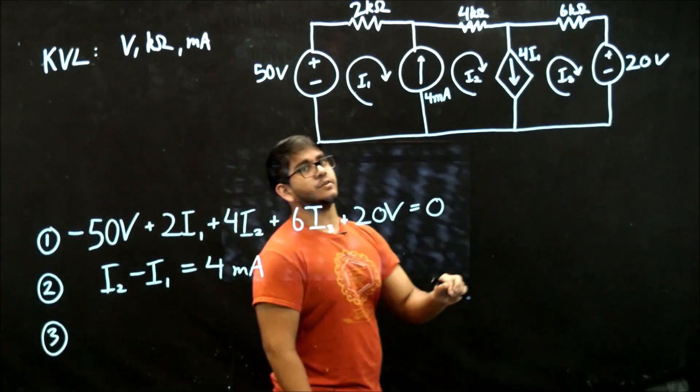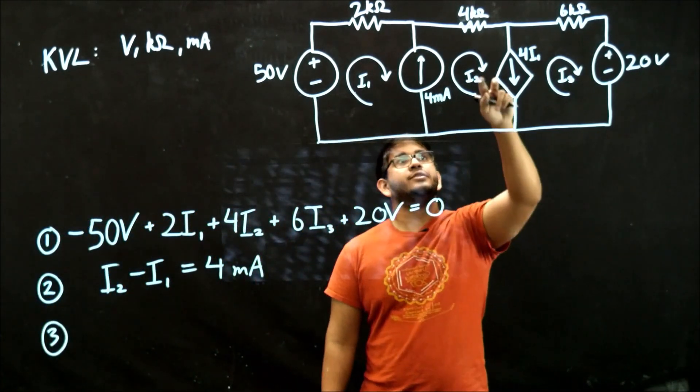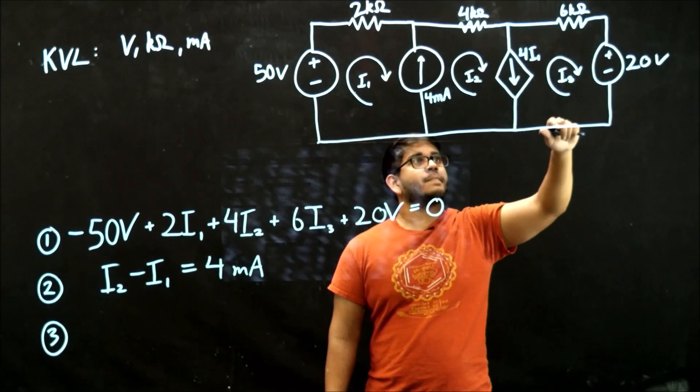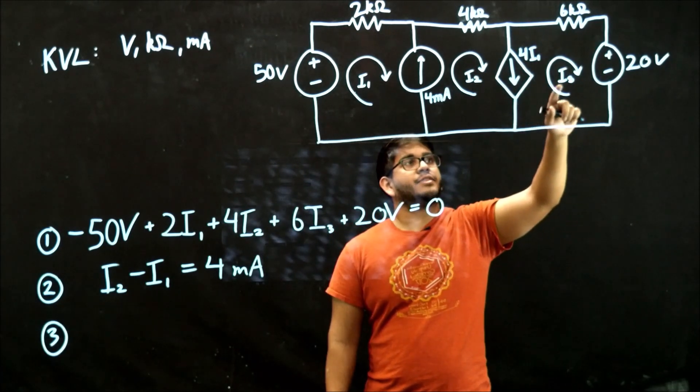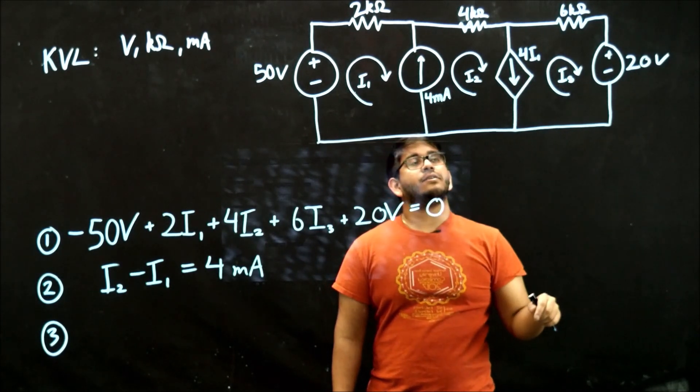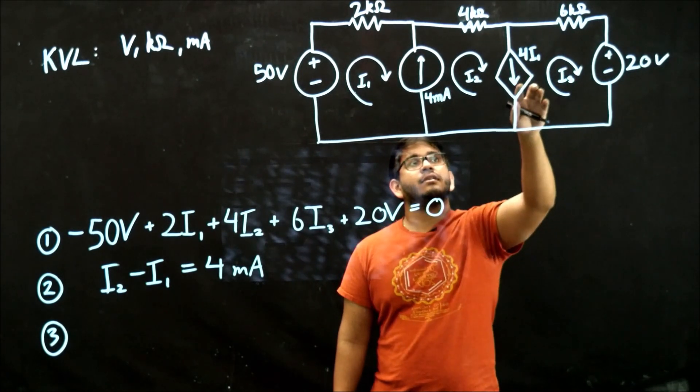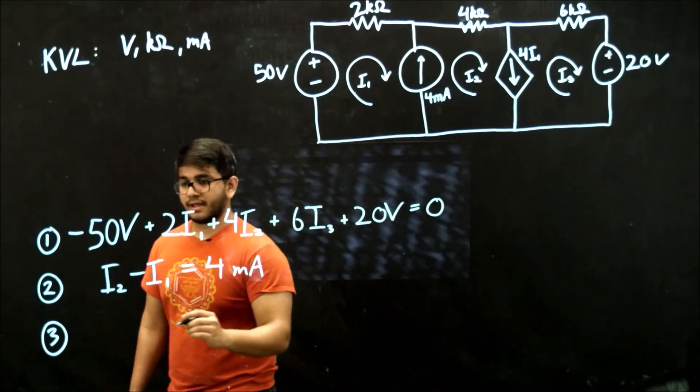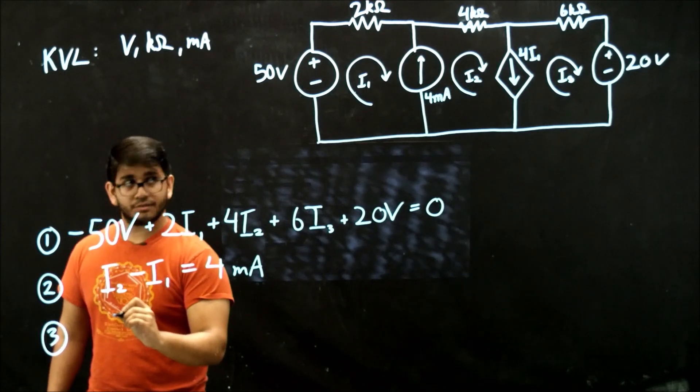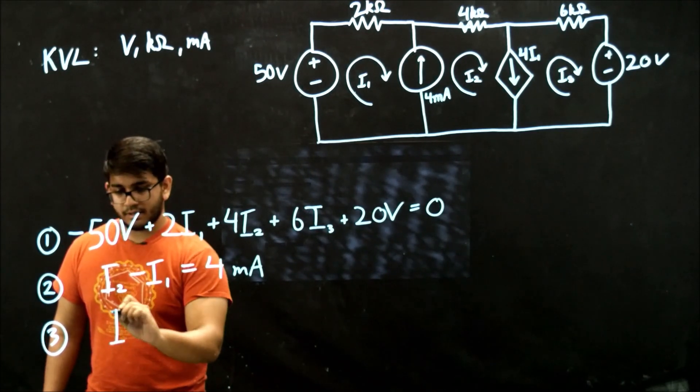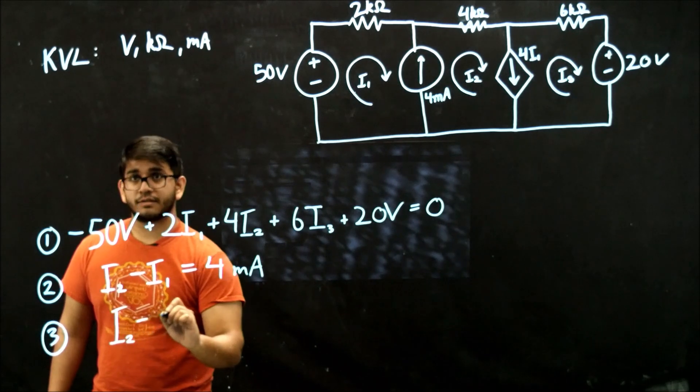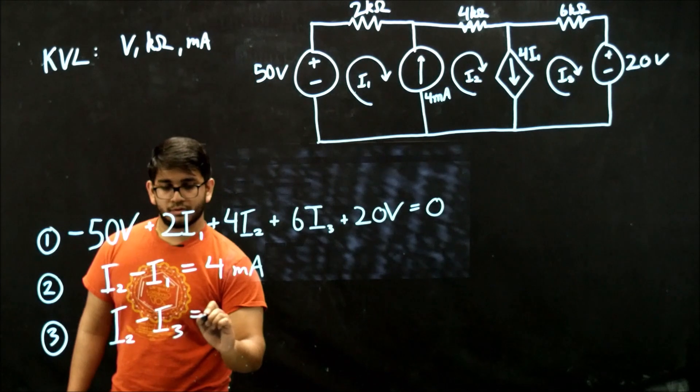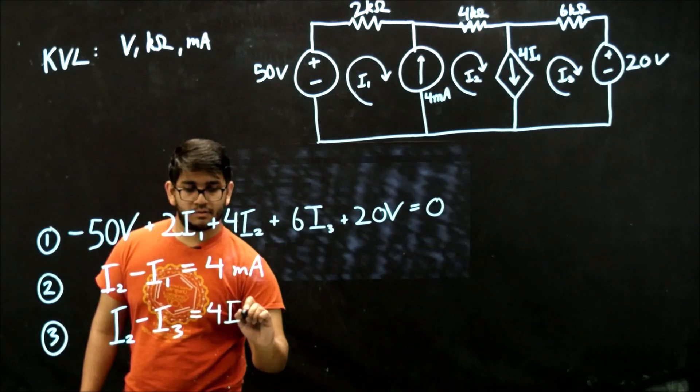And then for this branch right here, i2 is going once again in the direction of the dependent current source, and i3 is going counter that. And we know that the current source has a value of 4i1. So we can write that branch current as i2 minus i3 equals 4i1.